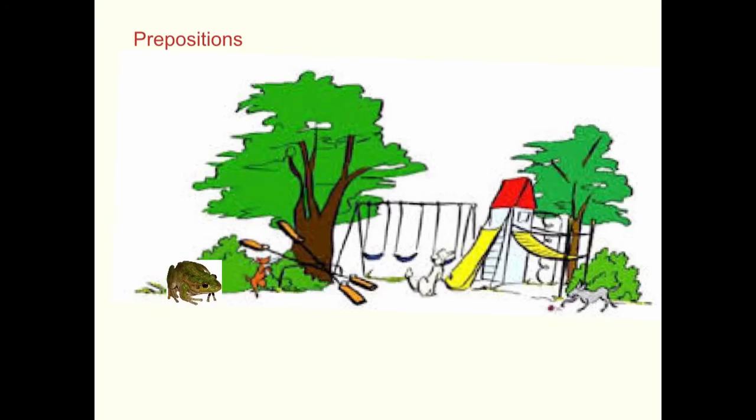For instance, we could have Preppy under the bush. He could be behind the tree. He could be on the swing. He could be behind the slide. He could go around the playground. He could play with the ball. So anything that shows a relationship in space or time, like he could come after the puppy dog in line. Anything like that is a preposition. And there are oodles of them.